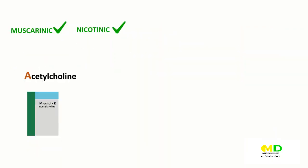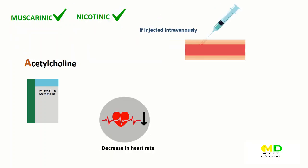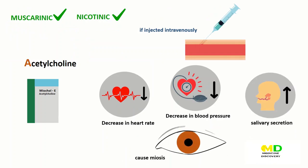Acetylcholine: although it is the neurotransmitter of parasympathetic and somatic nerves as well as autonomic ganglia, it lacks therapeutic importance because of its diffuse effects and its rapid inactivation by cholinesterases. Acetylcholine has both muscarinic and nicotinic activity. If injected intravenously, acetylcholine produces a brief decrease in heart rate and cardiac output, mainly because of a reduction in the rate of firing at the sinoatrial node.